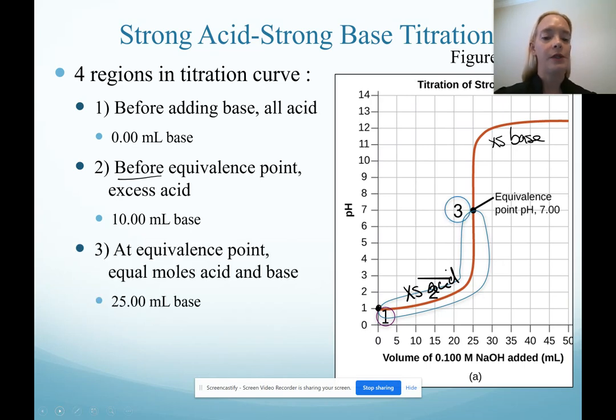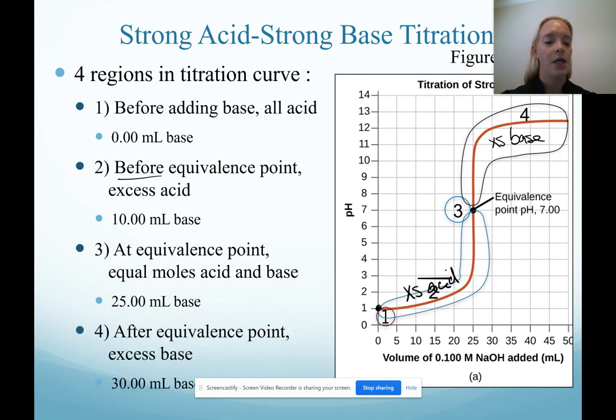At the equivalence point, again, when we have stoichiometric equivalence of acid and base. For all of our reactions, since there are one-to-one ratio, that means we have exactly equal moles of acid and base. And then we'll calculate after the equivalence point.